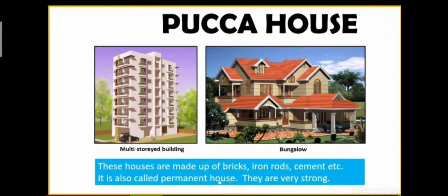Do you know why multi-storey buildings are built in big cities? Because the land is limited and the population is huge. Huge means large and population means the number of people. That is why multi-storey buildings are built in big cities like Delhi, Mumbai, Chennai and Kolkata — because land is limited and population is very large.